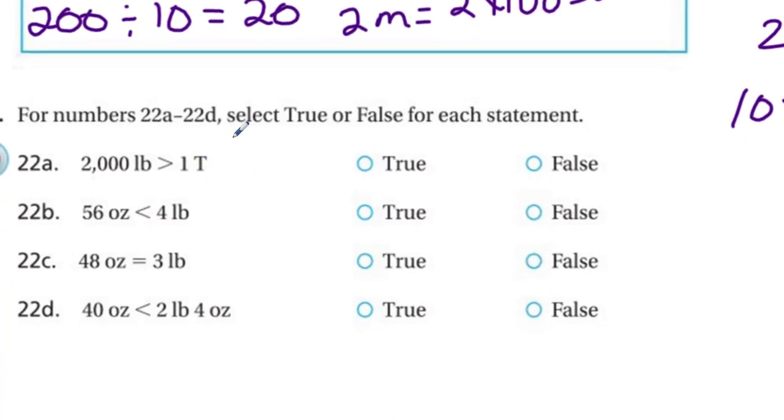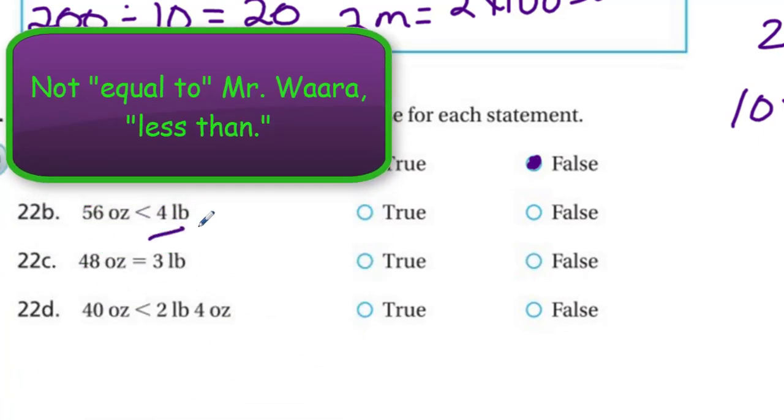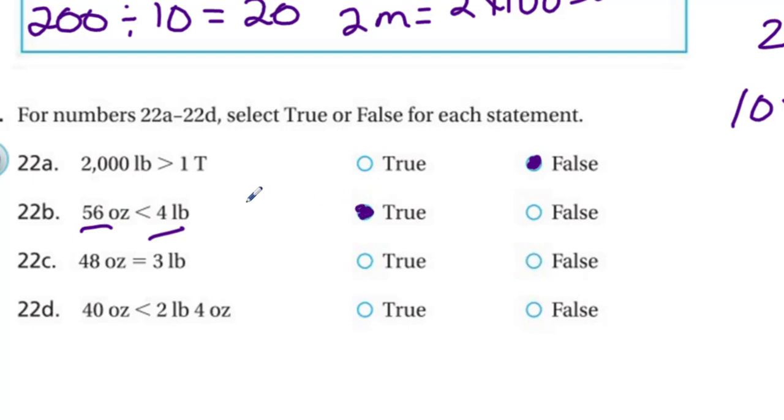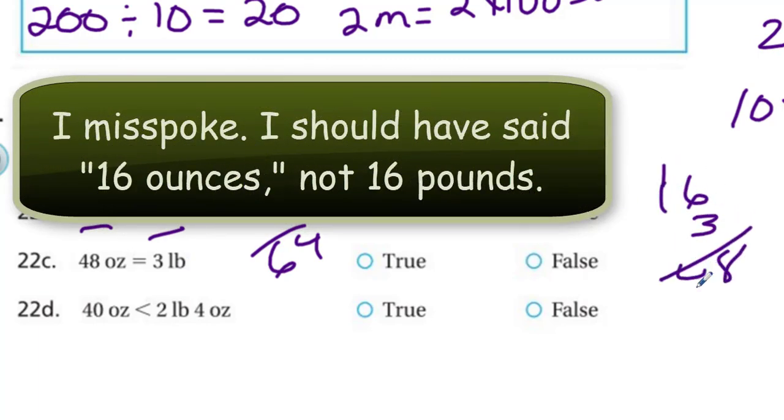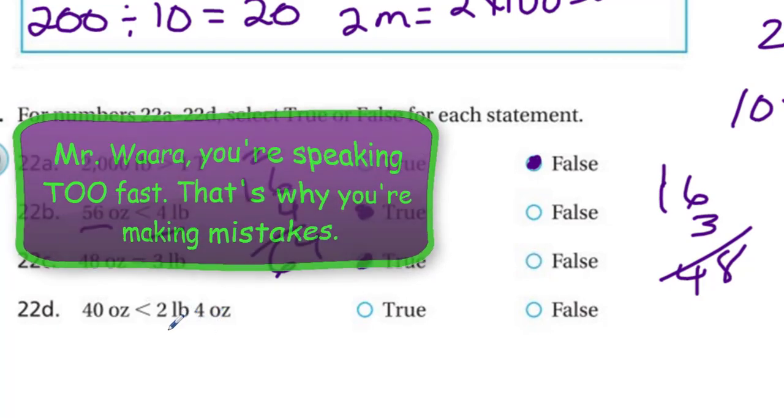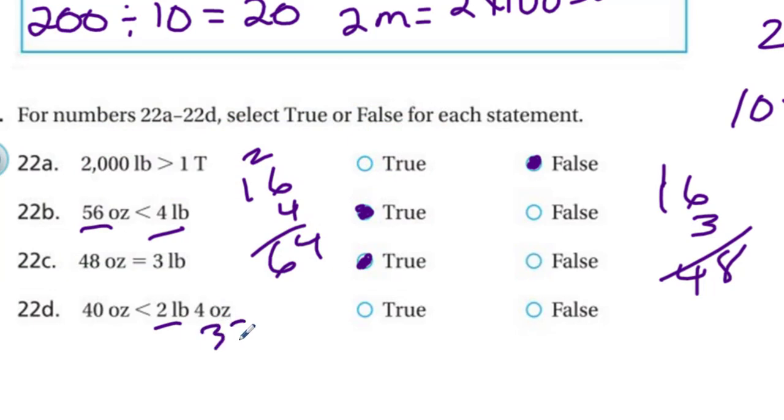For numbers 22A through 22D, select true or false for each statement. Just conversions. 2,000 pounds is greater than 1 ton. Nice try, we just did that one. False. That's not true. 56 ounces equals 4 pounds. Each pound equals 16 ounces, and 16 times 4 is larger than that. Yes, that one is true. You can do the math, but 16 times 4 is 64. 48 ounces equals 3 pounds. 16 pounds times 3, 18. Yes, 48, that's true. And 40 ounces equals 2 pounds 4 ounces. Trying to trick us here. Let's put everything in ounces. We have 2 pounds—double 16 is going to be 32, and then 32 plus 4 is going to be 36. Is 36 greater than 40 ounces? No, 36 is not greater than 40.